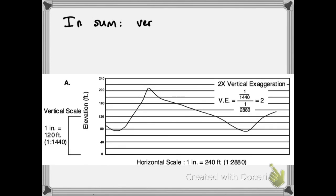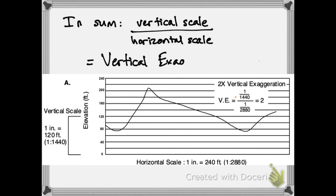So, to sum up, the vertical scale divided by the horizontal scale gives you the vertical exaggeration of the topographic profile.